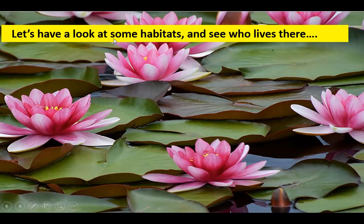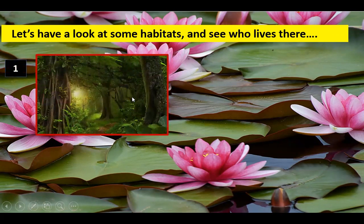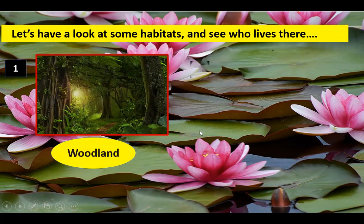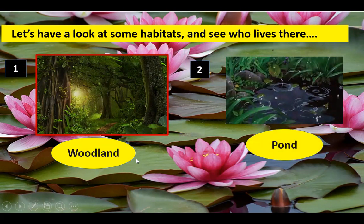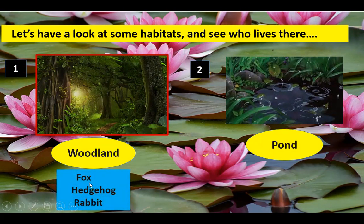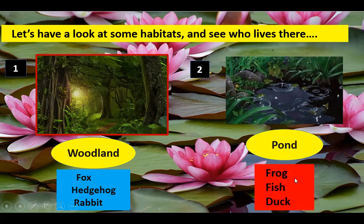Let's have a look at some habitats and see who is there. First one: woodland. Second one: pond. Fox, hedgehog, and rabbit are woodland animals. Frog, fish, and dove are pond animals.